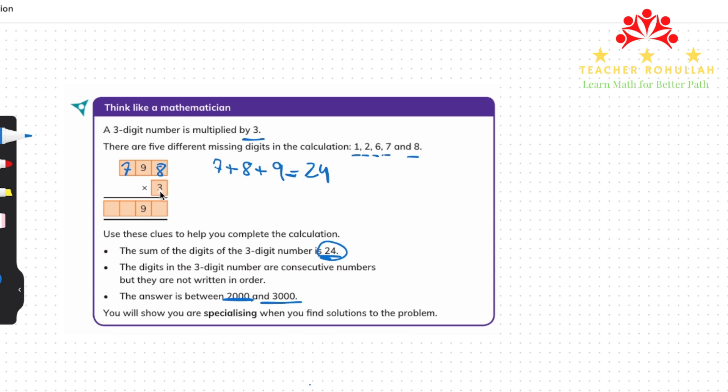So 3 times 8 is 24. We write the 4 here and carry 2 above the tens place. 3 times 9 is 27, 27 plus 2 is 29. So 9 is already written here. 3 times 7 is 21 and 21 plus 2 which is carried here is 23. Do we have the digits 1, 2, and 6 here? We do not have. So let's now try the other one.